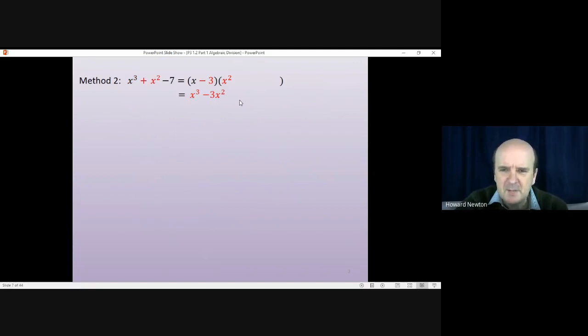With easier questions you don't have to keep track like I am doing here, but with harder questions it's a very good idea. So the x cubes are sorted. We don't need to worry about them anymore. Looking at the x squared, we want 1 x squared. We've got minus 3 x squared, so we need to add another 4. Minus 3 plus 4 would give us 1 x squared.